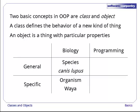There, the general category is the species, such as Canis lupus, and the specific thing is a particular wolf, like Waya. In a program, the general class is something like Vector, and the object is a specific vector with particular XYZ values representing the velocity of some object in space.